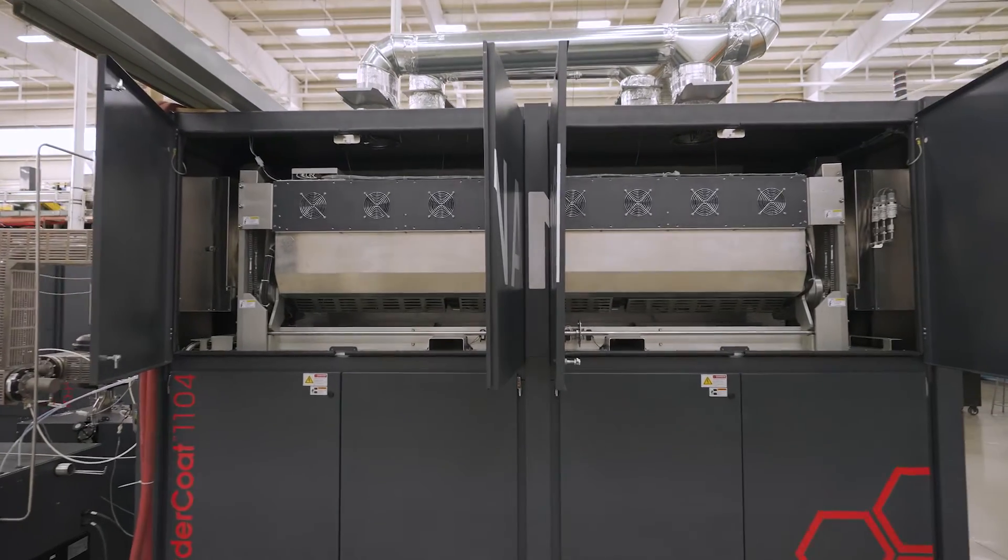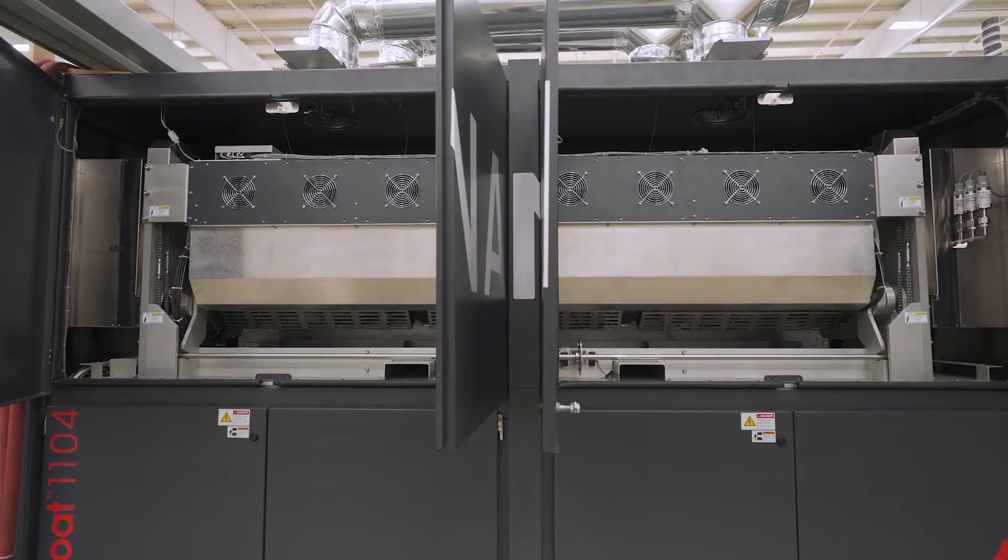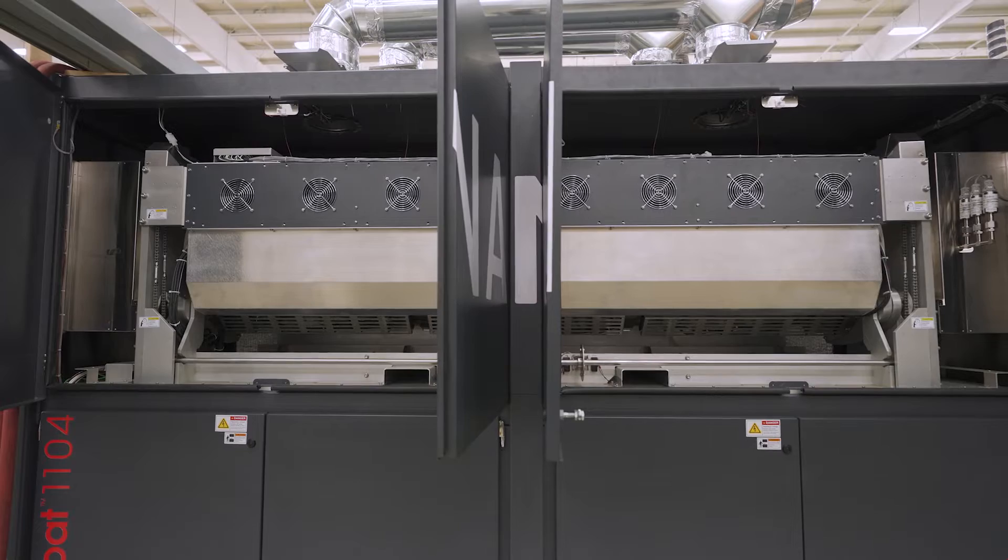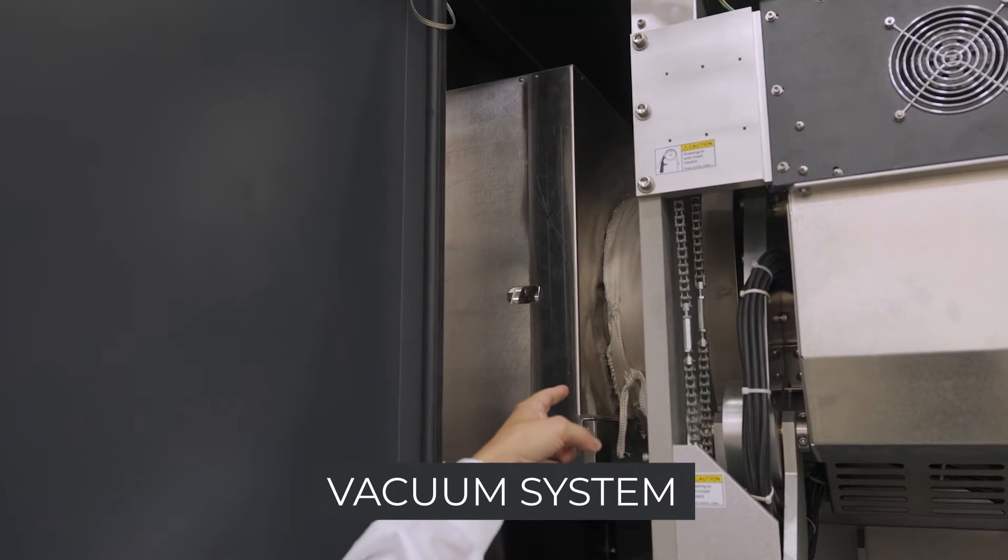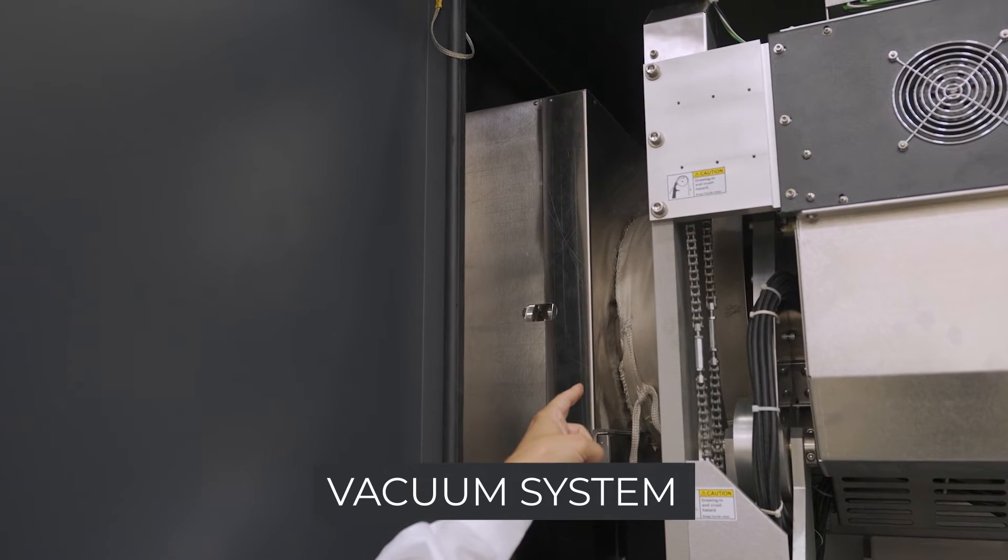The reactor size is such that you can process up to 50 kilograms of powder per run. This is the exhaust end of the chamber. You can see where the exhaust gases come out. Those gases have basically spent.